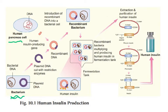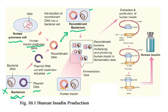We take out the plasmid DNA from the bacterium and cut it using a restriction enzyme. From the human cell, we take out the human insulin-producing gene and insert it into the cut plasmid — it has now become recombinant DNA. We then put this recombinant DNA into a new bacterium, creating a recombinant or transgenic bacterium, one which has been transformed.